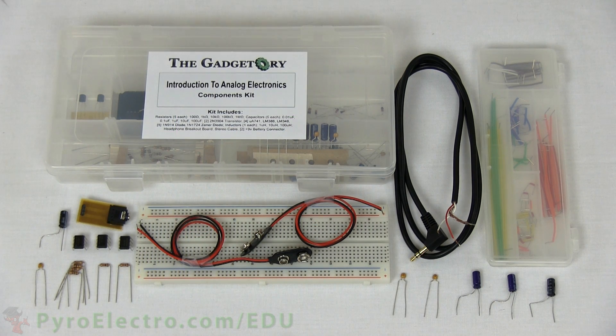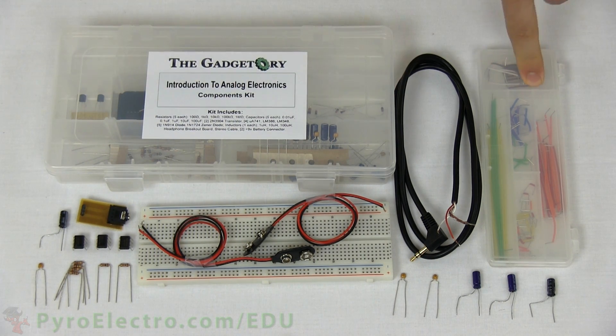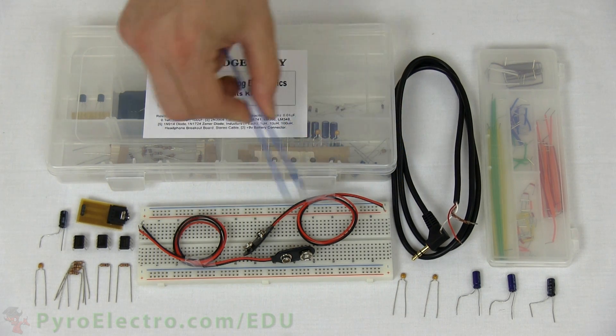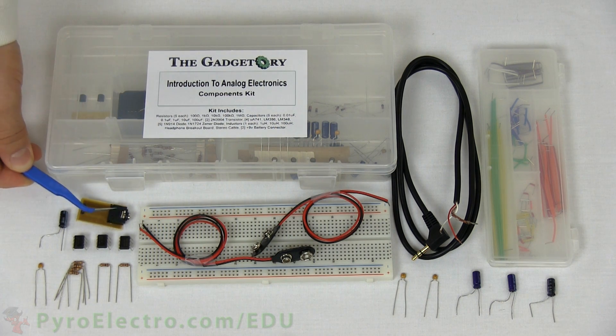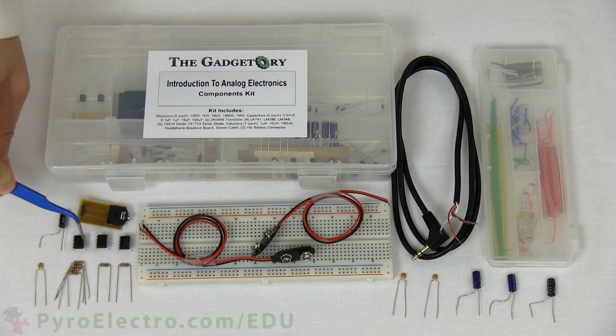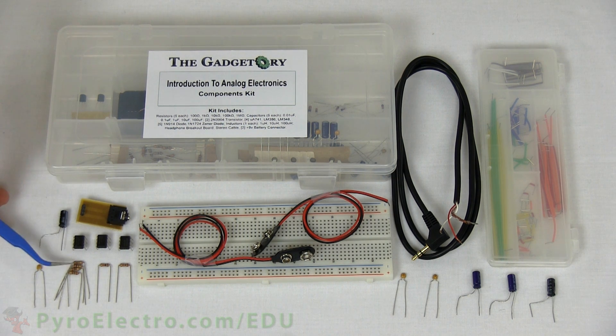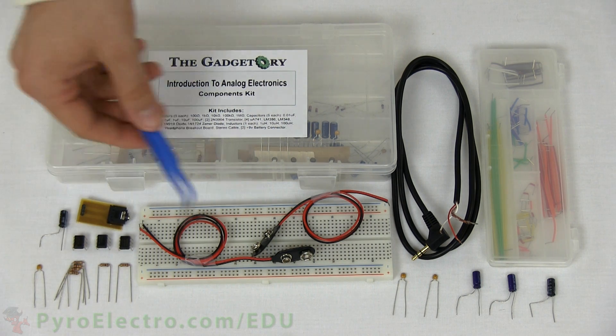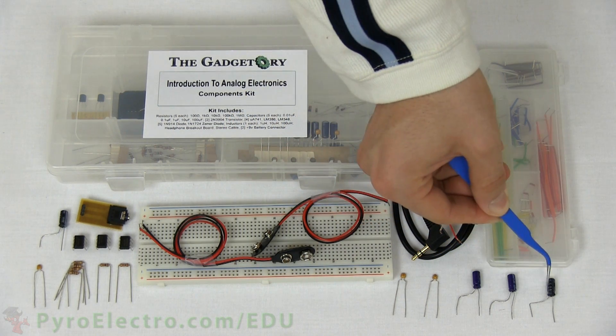To build this circuit, we'll need a breadboard, the jumper wire kit, and from the analog parts kit: the stereo cable with tinned wires, two 9-volt battery connectors, the audio jack breakout board, three 741 op-amps, a 1-microfarad capacitor, a 10-nanofarad capacitor, four 100-ohm resistors, two 10-kiloohm resistors, and finally, five capacitors: 10 and 100-nanofarad, one 10 and 100-microfarad.